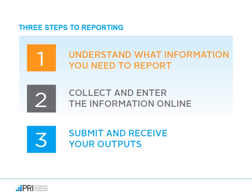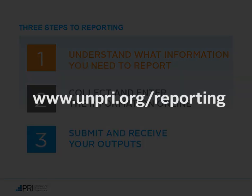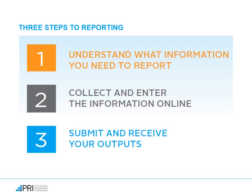Now that you know when to report, I am going to outline the three basic steps of the reporting process. Firstly, it is good to get an understanding of the type of information that the PRI will ask you to report on. You can do this by visiting the Reporting for Signatories webpage at UNPRI.org and downloading the most recent copy of the reporting framework. On this webpage, you can also view our main definitions document and any other guidance provided. Secondly, once you understand what information you will report on, you can prepare for the reporting cycle by starting to collect that information within your organization. The reporting cycle starts in January each year, when you will be able to log into our online reporting tool and enter the information you have collected.